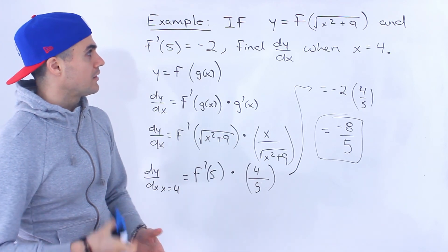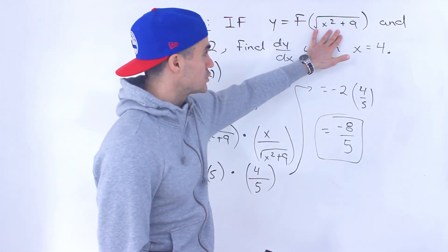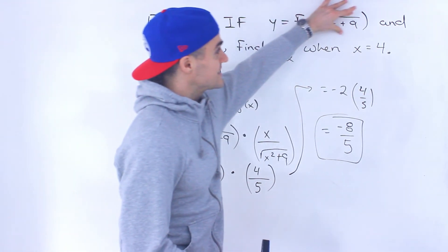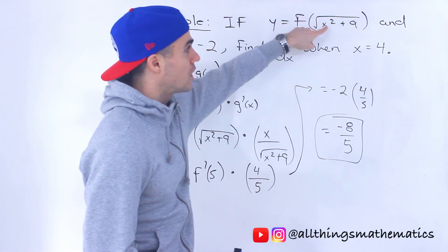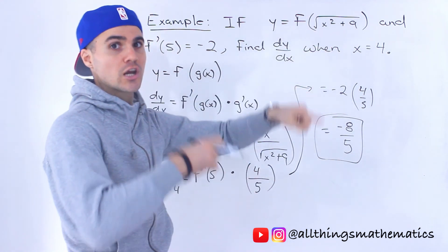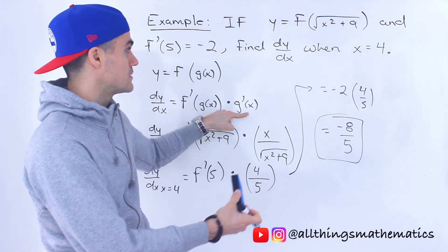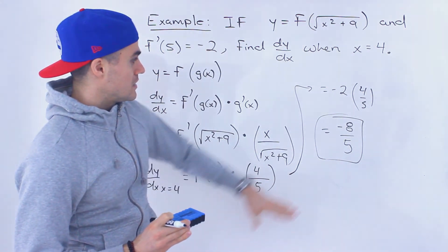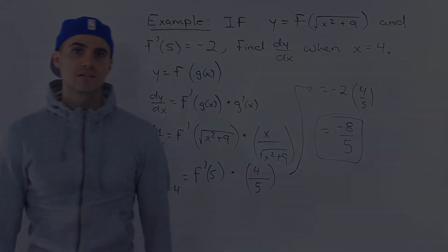Right, so you're just applying the chain rule. You got f of another function. So when you derive it, apply the chain rule. And then even when you have to take the derivative of that inner function, that's a composite function as well. So you have to apply the chain rule on that as well when you're taking the g prime of x. So using the chain rule a couple of times, final answer, negative 8 over 5.